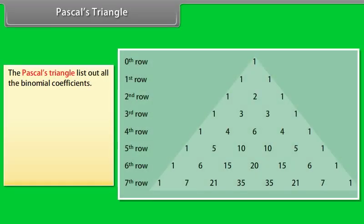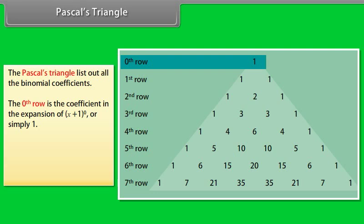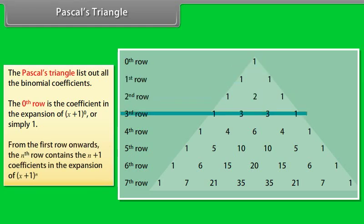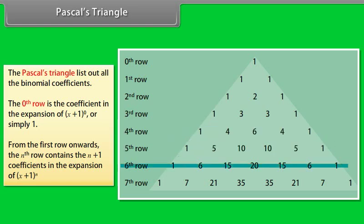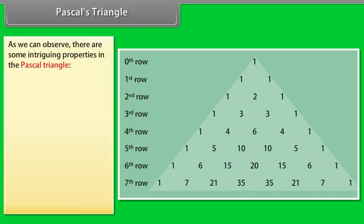Pascal's triangle lists out all the binomial coefficients as shown in the figure. The zeroth row is the coefficient in the expansion of x plus 1 raised to power 0, or simply 1. From the first row onwards, the nth row contains the n plus 1 coefficients in the expansion of x plus 1 raised to power n.